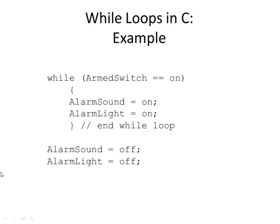Here's an example using a simple alarm system — like a home security system with a key switch that turns it on and off. While the armed switch is equal to on — remember, two equal signs means equals in C — it's going to sound the alarm and turn on the light. You don't want to do that just once, because you have to be able to disarm the system, and if it's still armed you want to keep repeating this process.